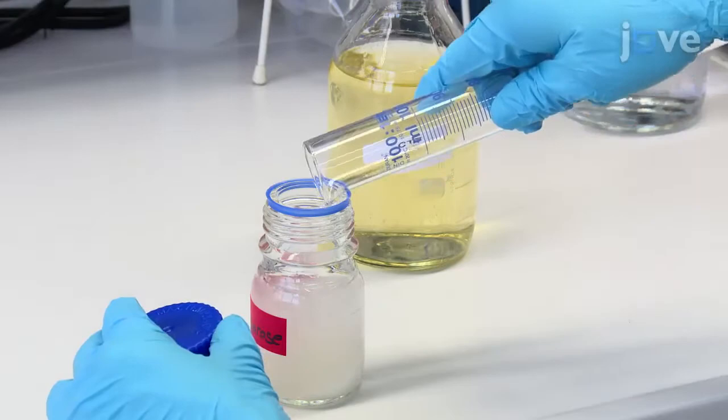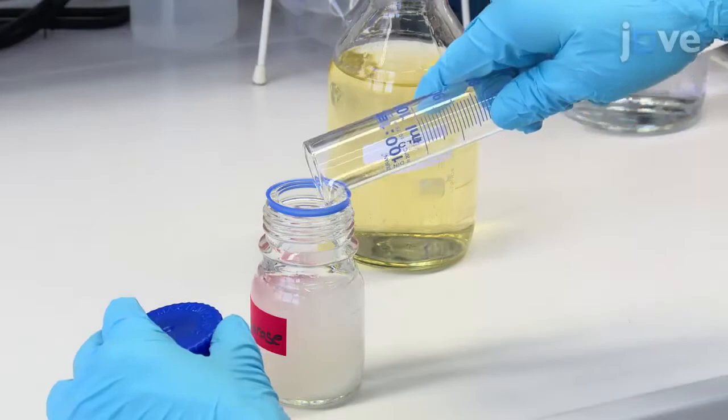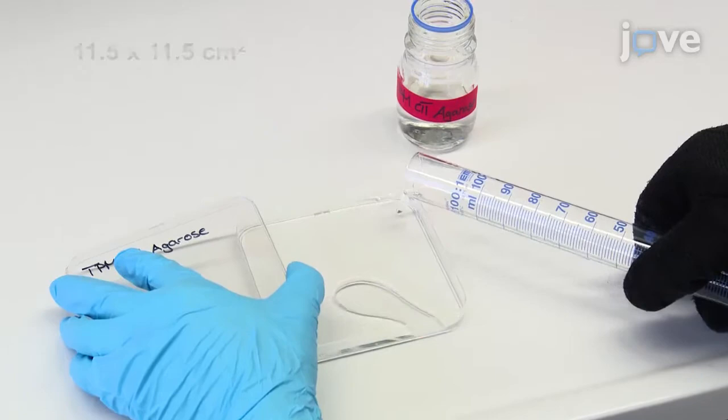Microwave the solution until the agarose is molten. Fill a petri dish with approximately 60 mL of molten agarose and let it cool down to room temperature.